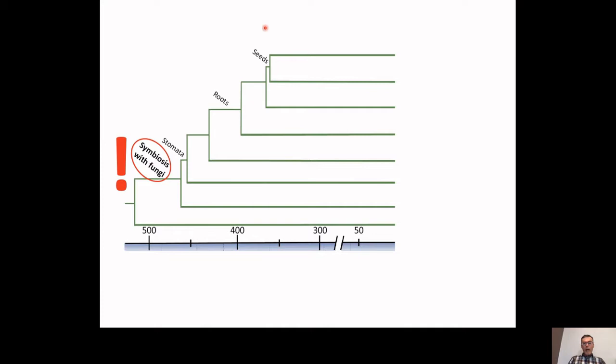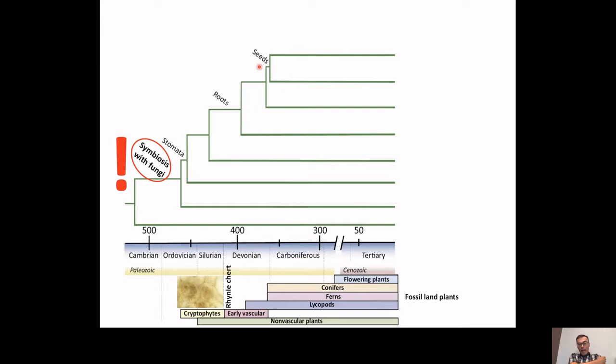If we look at the evolution of plants — going back to about 500 million years ago — the idea is that very early on, as soon as plants came onto land, they started to engage in symbiosis with fungi. Notice that this is very early — before plants had stomata for breathing, before they had roots, before they had seeds, before they had flowers or fruits. This is something quite interesting.